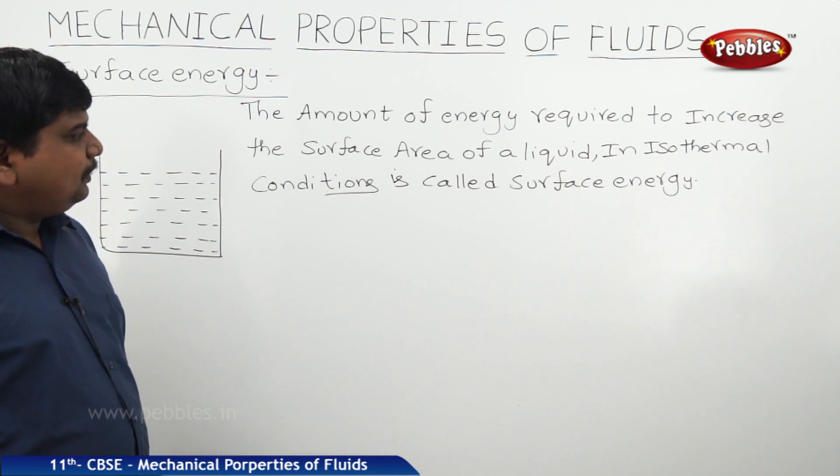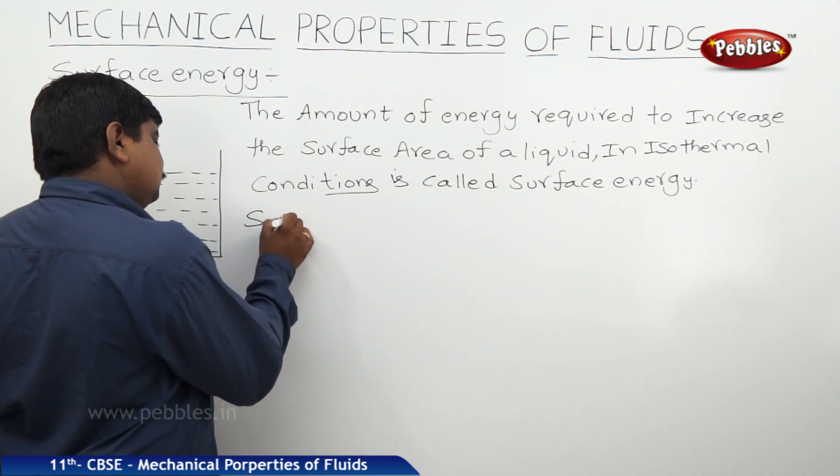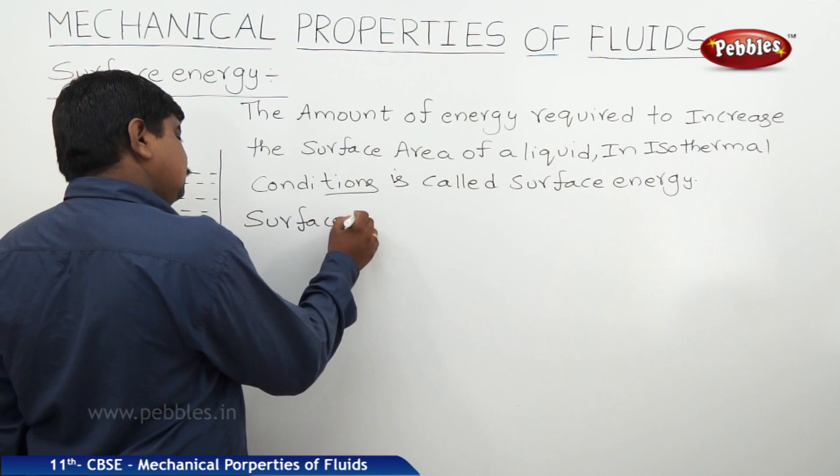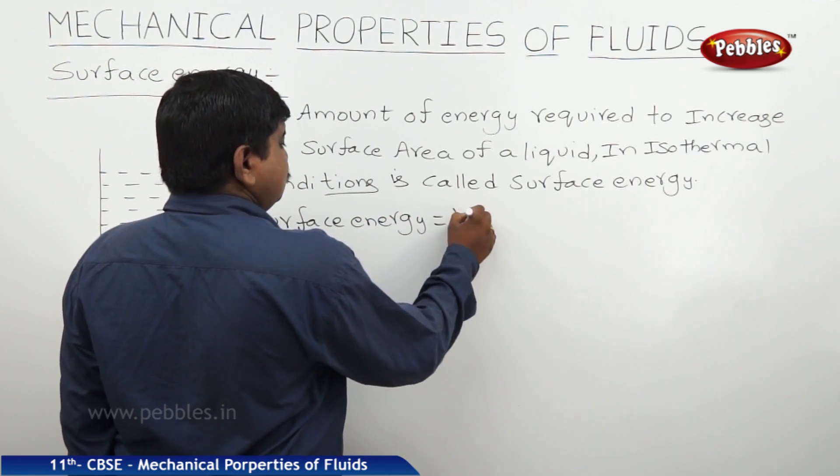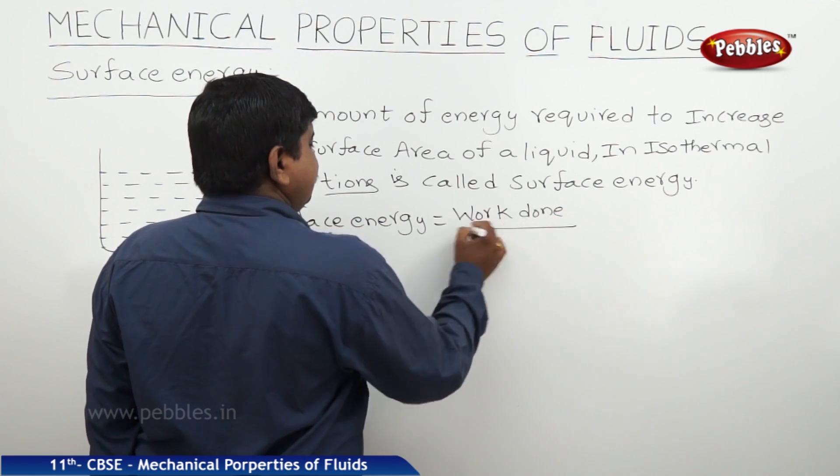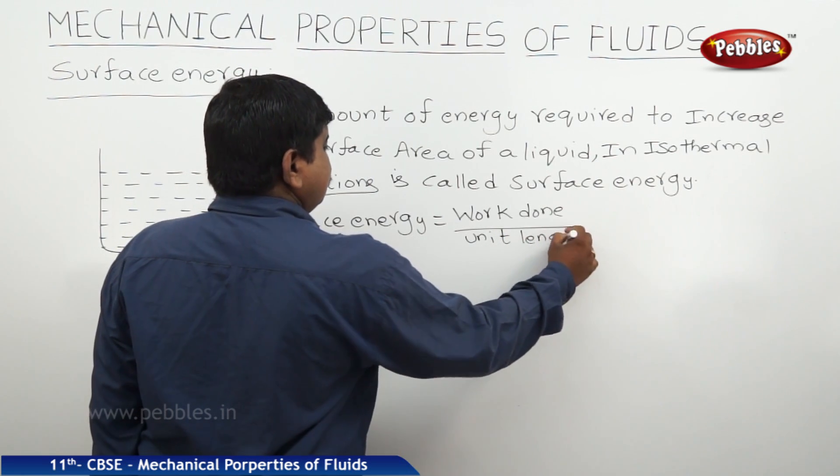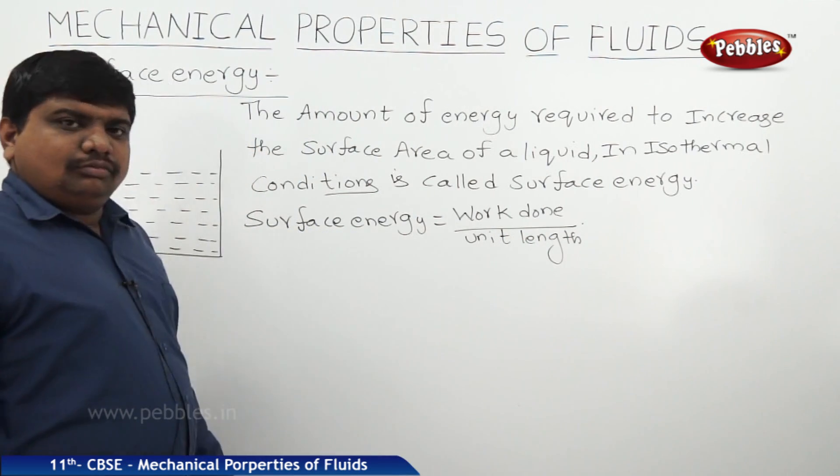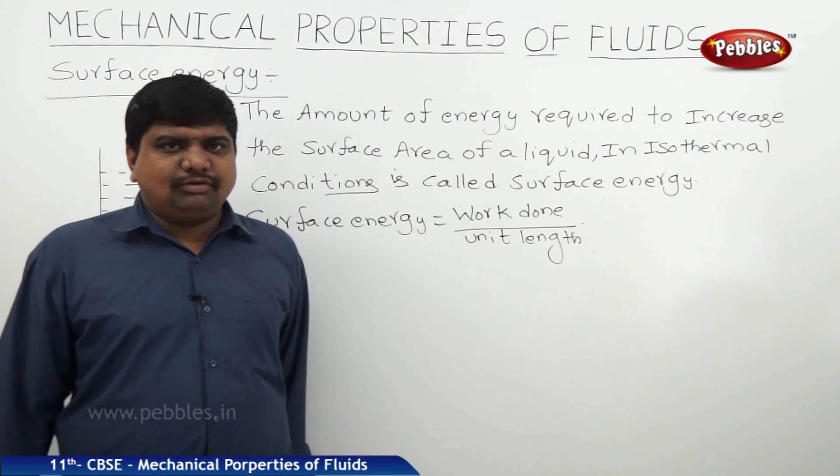Surface energy is called work done per unit length. Mostly we can say that work done and energy are the same dimensional physical quantities.